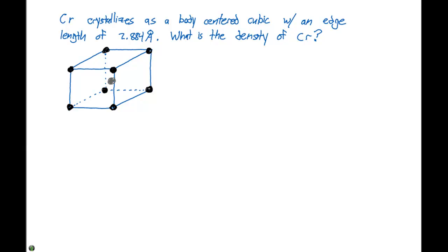When we draw these unit cells, we neglect to show that each of these atoms touch each other. One of the things I want to do is draw this body diagonal from the front corner all the way up to the back corner. This edge length is 2.884 angstroms, and since it's a cube, all of these lengths are the same, with 90 degree angles.